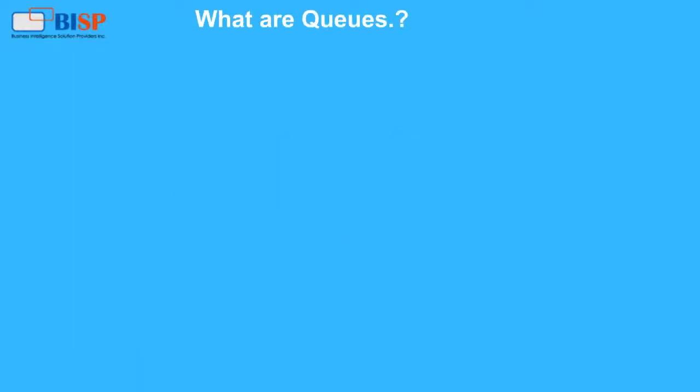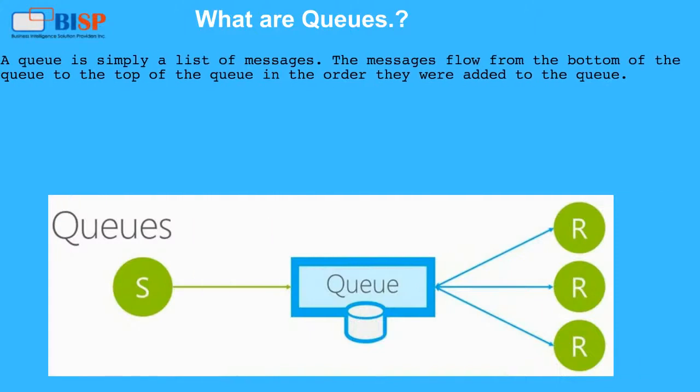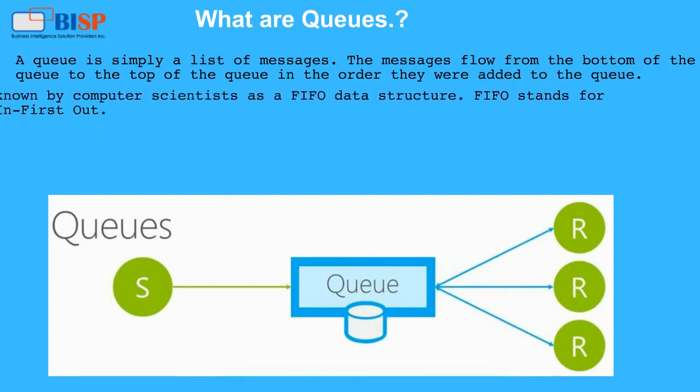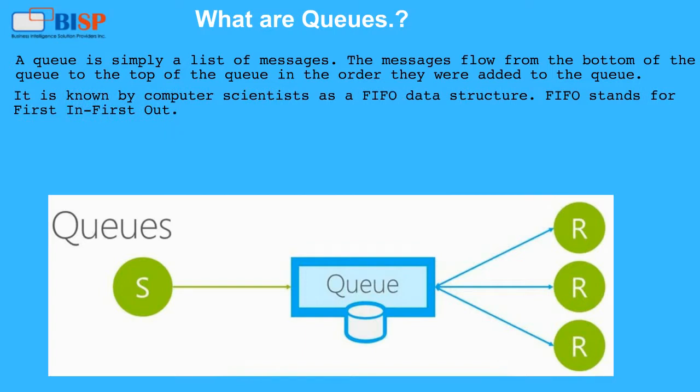What are queues? A queue is simply a list of messages. The messages flow from the bottom of the queue to the top of the queue in the order they were added to the queue. It is known by computer scientists as a FIFO data structure. FIFO stands for First In, First Out.